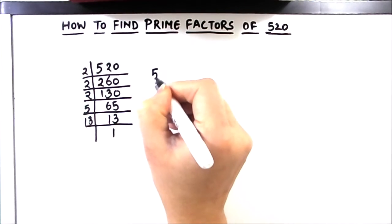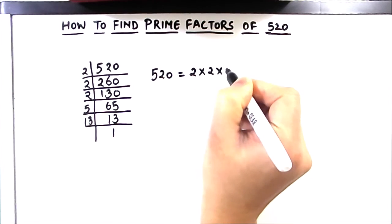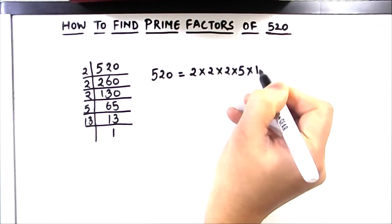Let's write it as the product of its prime factors. 2 times 2 times 2 times 5 times 13.